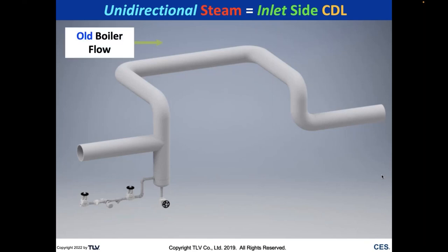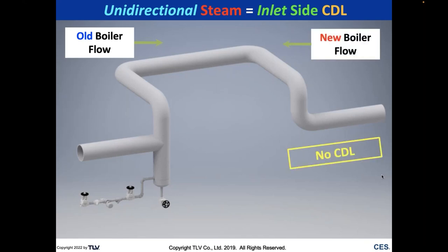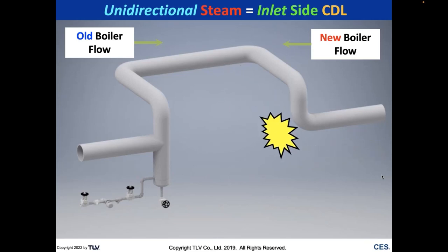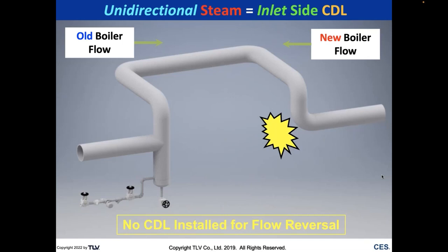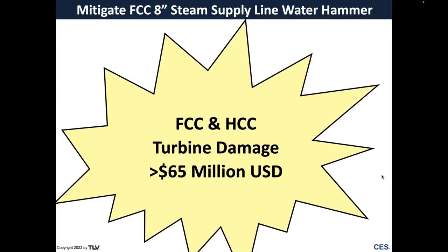Another problem: one refinery's old boiler flowed in one direction with a CDL in place, but when they switched to a new boiler they didn't add a CDL for the new flow direction, damaging those elbows. When you have flow reversal, make sure vertical risers have traps at the bottom to discharge condensate. That was the cause of the FCC and HCC turbine damage in the United States — estimated at 100 to 160 million dollars.